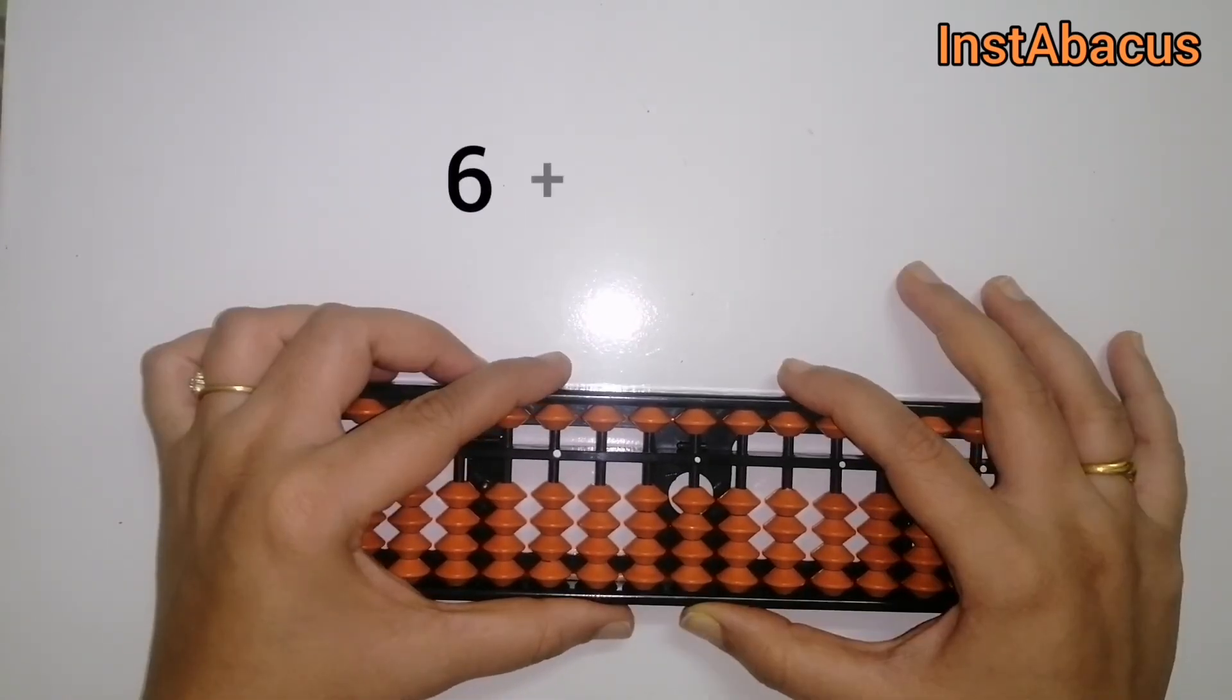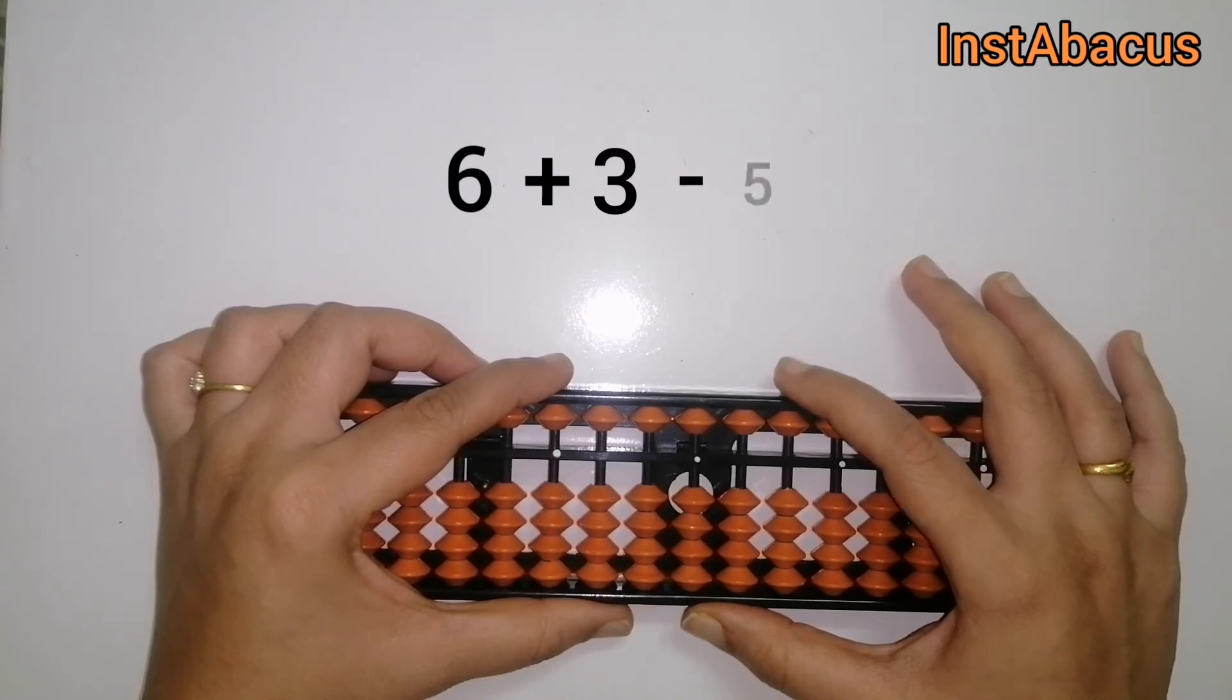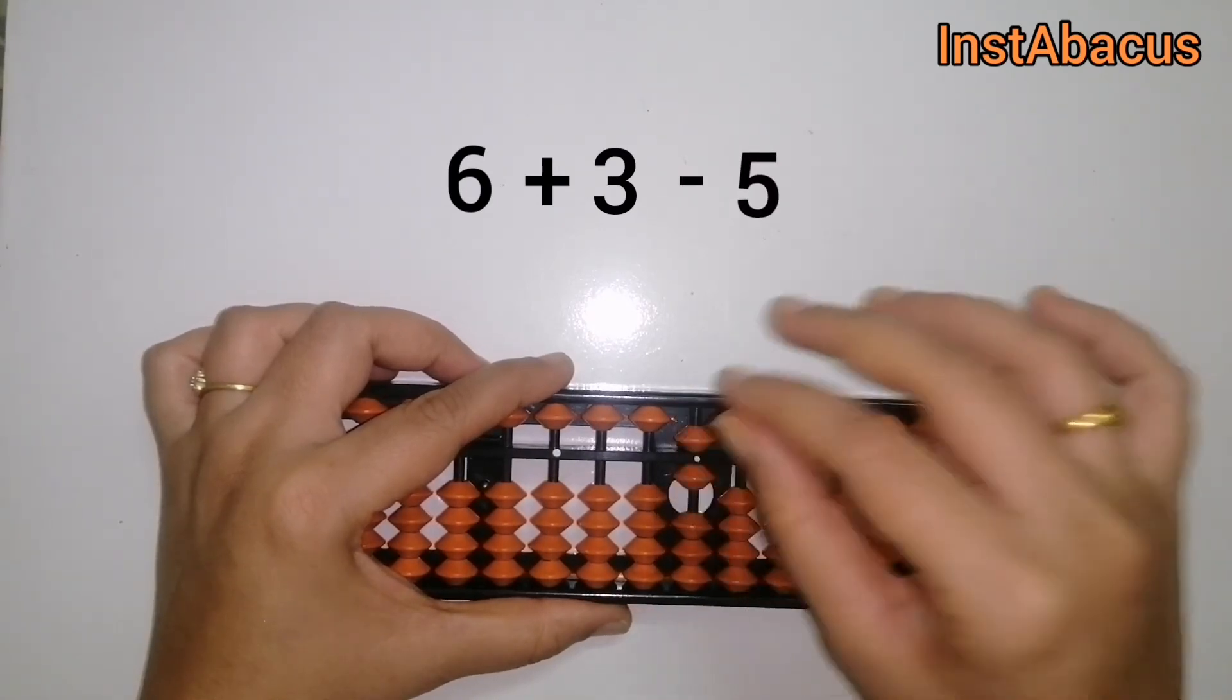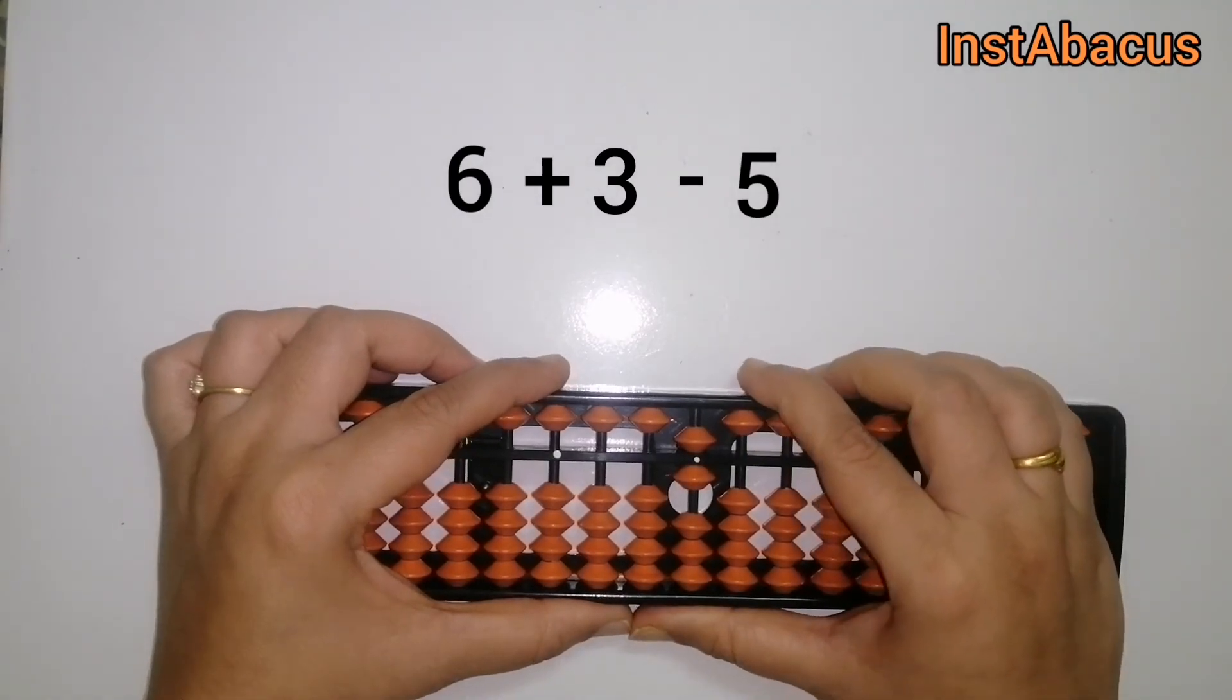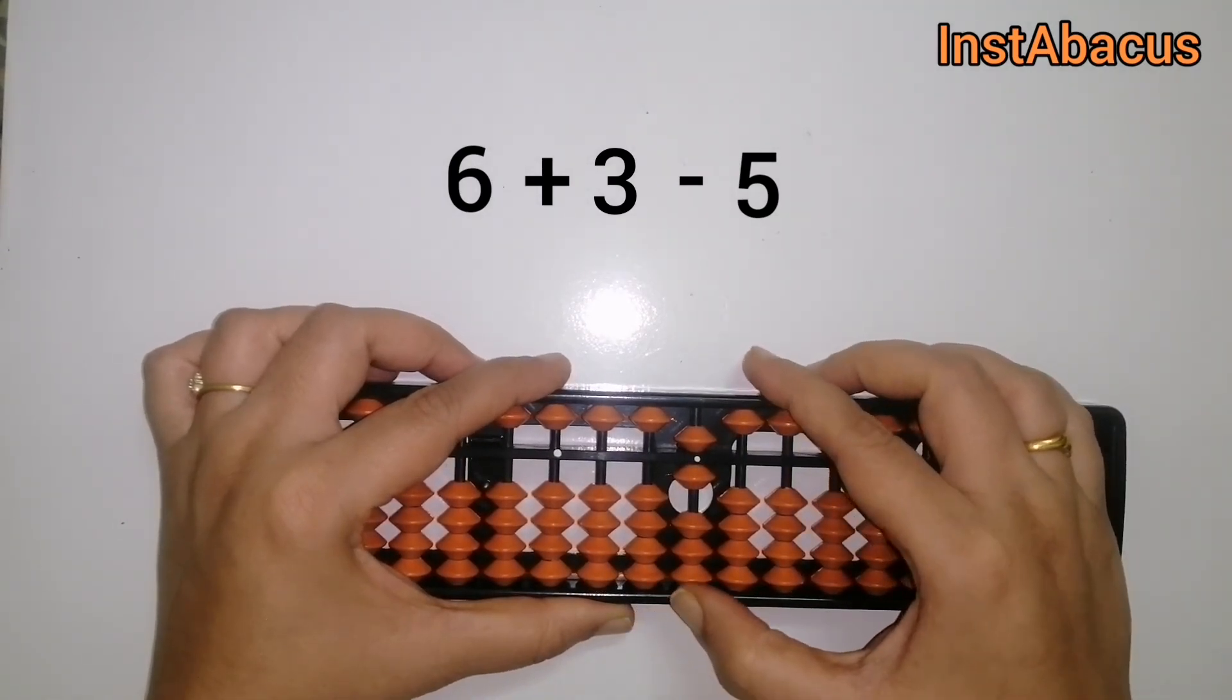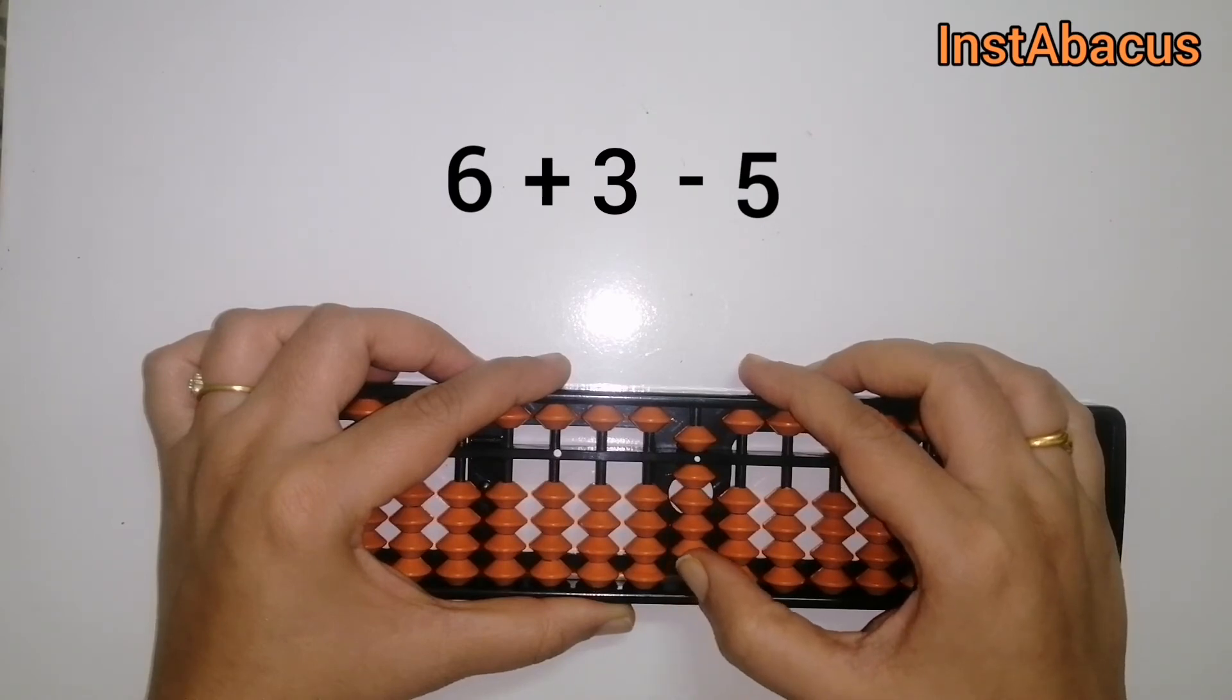6 plus 3 minus 5. Okay, so this is 6 on our abacus and to this we are going to add 3 by moving these 3 earthly bits up.